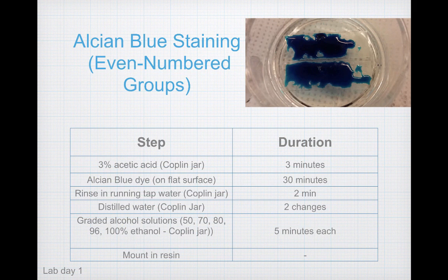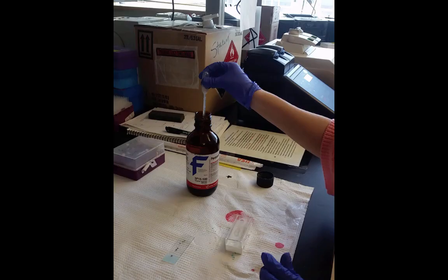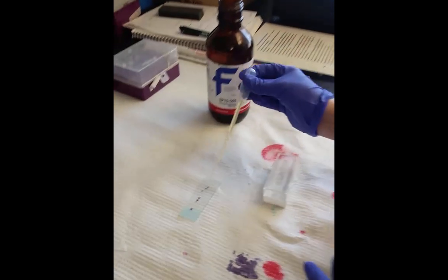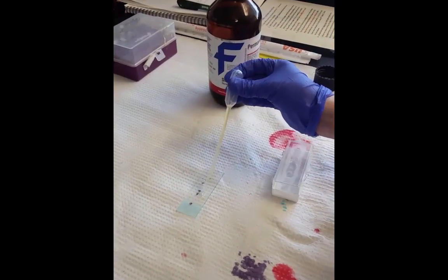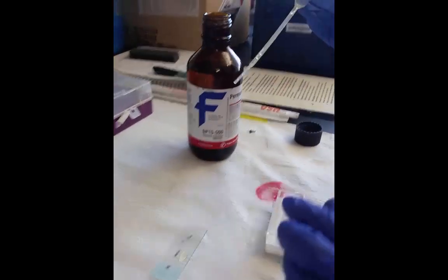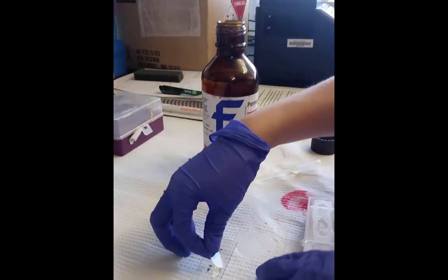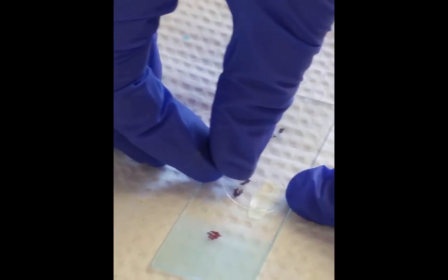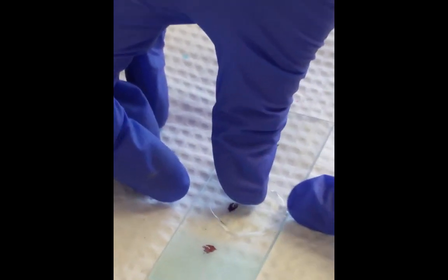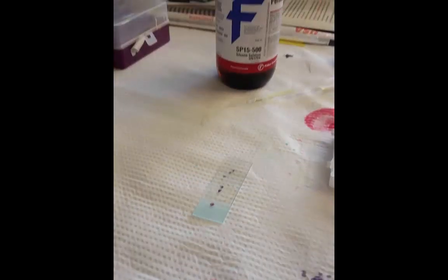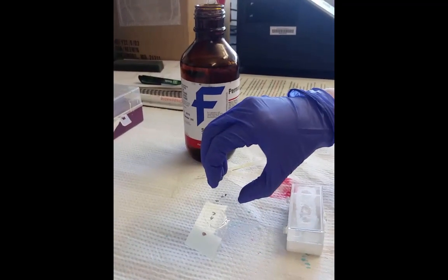Finally, mount your specimens in a synthetic resin called Permount. Mounting is important to preserve and support the stained sections during light microscopy. Pipette the Permount onto the bottom of the slide, then carefully place a thin glass coverslip over top. The pressure of the coverslip will cause the Permount solution to spread over your samples — try not to get any bubbles in there because that will cause optical distortion during microscopy.